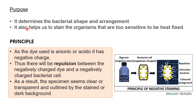So why or when to perform this particular staining technique? The first purpose is to determine the bacterial shape and arrangement — by doing negative staining you don't always need to go for gram staining. It also helps to stain organisms which are too sensitive to be heat fixed. In some staining techniques there is a heat fixing process, but some organisms are heat sensitive, so negative staining can be used to observe them.